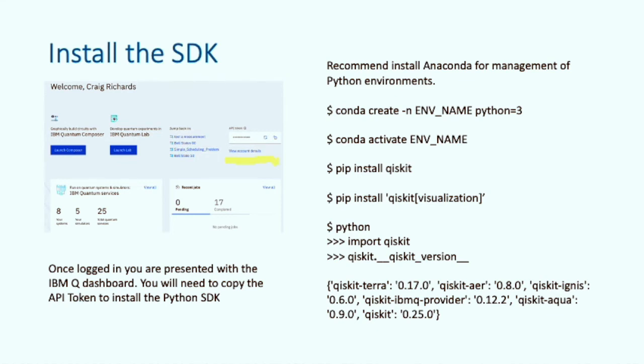Once Anaconda is installed, run the conda create command. Specify the name of the environment you want to use. And you need to specify that the Python version you're using is Python 3. Then activate your conda environment, passing in the environment name you set up in the previous command.